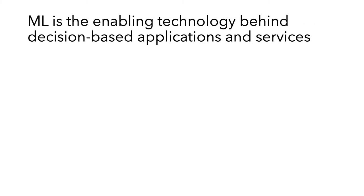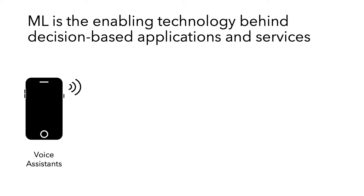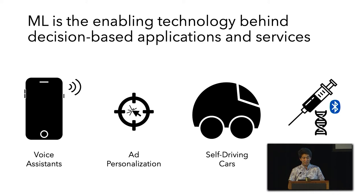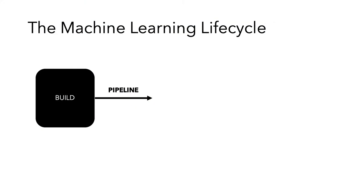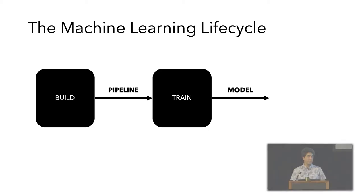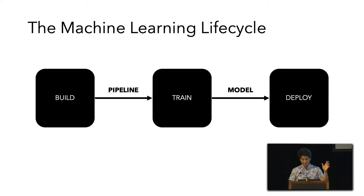Machine learning is the enabling technology behind decision-based applications and services. Machine learning is everywhere, and as time goes on we're probably going to start seeing it more and more often. These machine learning applications depend on models for their proper behavior and predictions. Models are part of the machine learning lifecycle: we start by building a pipeline, run it to train a model, and once we have sufficient confidence, we deploy it into a prediction-serving system.